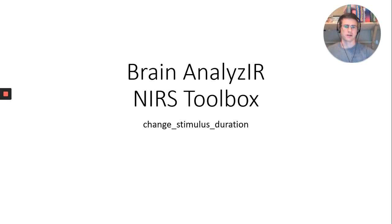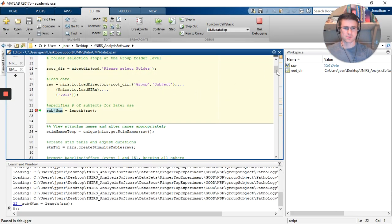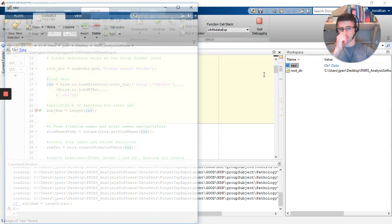Hi everybody. This is a very quick video on how to change stimulus duration in the Brain Analyzer NIRS Toolbox. I've loaded a data set into the NIRS Toolbox. I used the loadNerex function and saved the output as raw. You'll notice I have the variable right here.